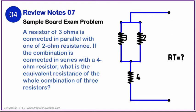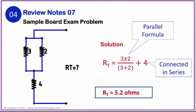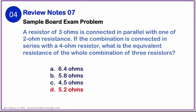Solving for the total resistance, we have total resistance equals 3 times 2 divided by the sum of 3 plus 2 plus 4 ohms connected in series. The resulting total resistance is equal to 5.2 ohms. Well, from the choices given, our correct answer is letter D, 5.2 ohms.